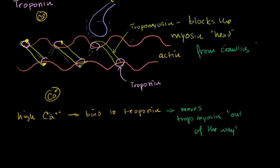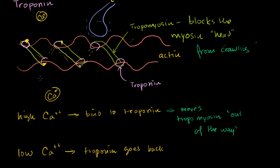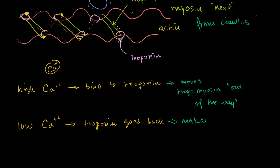When the tropomyosin moves out of the way, the myosin can start walking up the actin — pushing the actin — as we discussed in the last video. But if the calcium concentration goes low, the calcium ions are released from the troponin. The troponin returns to its standard conformation, and that makes the tropomyosin block the myosin again.